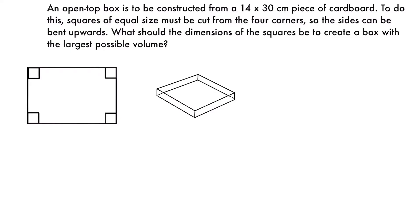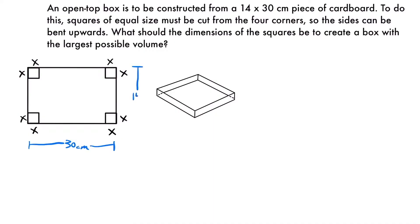The only thing we need to label here is the dimensions of the little squares we're cutting out. I'm going to label each edge of that square with x, because they're all going to be equal — x by x. We also know that this piece of cardboard is 14 by 30 centimeters, so the longer side is 30 centimeters and the shorter side is 14 centimeters.